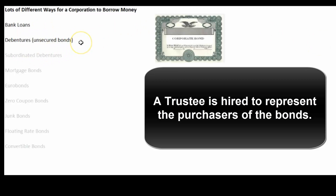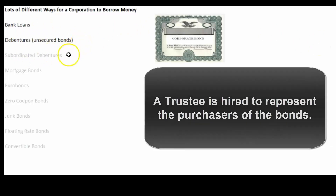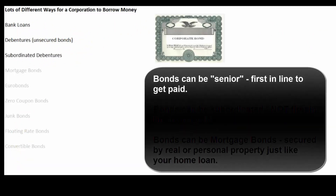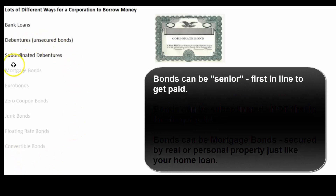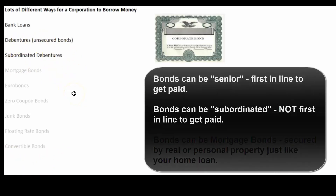The bonds could be senior debt of the corporation, or they could be subordinated — meaning there might be other debt of the corporation that gets paid first before these bondholders get paid. In that case, these bondholders would want a slightly higher interest rate for being subordinated to other creditors.